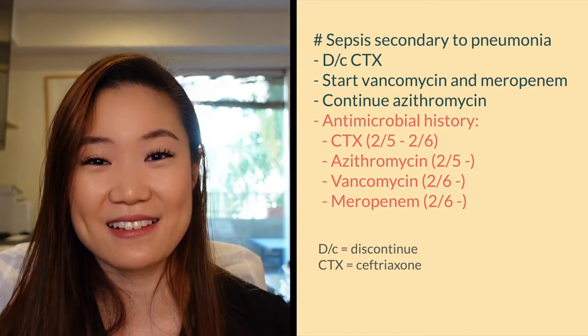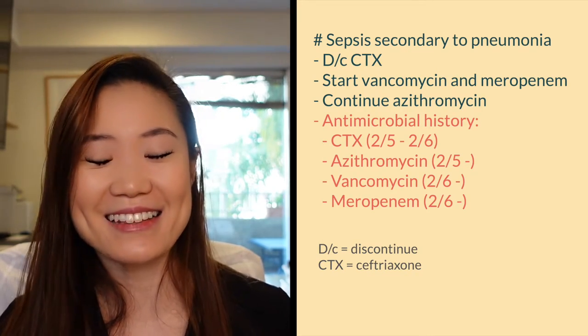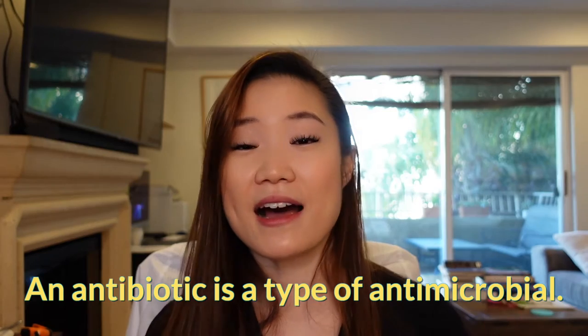Tip number seven: keep track of your antimicrobials in a list. Note that I say 'antimicrobials,' not 'antibiotics' — antimicrobials treat bacteria, fungi, viruses, etc., while antibiotics refer specifically to medications that treat bacteria. If you're treating multiple possible organisms, label it as an antimicrobial list. This is especially useful for long hospitalizations so the person inheriting the patient knows what was given earlier, and it also makes writing the discharge summary much easier.